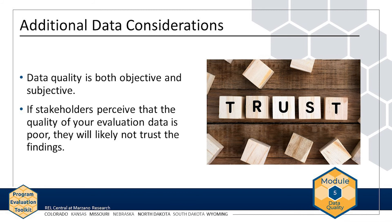Data quality is both objective and subjective. So far, you have learned about objective considerations of data quality. However, if stakeholders subjectively perceive that the quality of your evaluation data is poor, they will likely not trust the findings. For example, if the AMP evaluation team is collecting data to address the evaluation question — how many of each type of recreational activities were offered to AMP participants — and stakeholders believe that school staff may have inflated counts of these activities to create a favorable outcome, the stakeholders may distrust the findings.